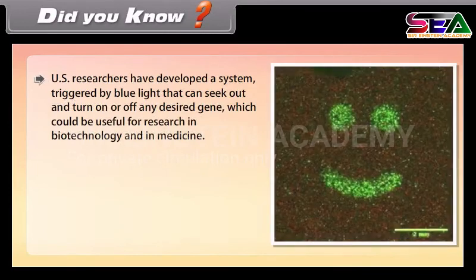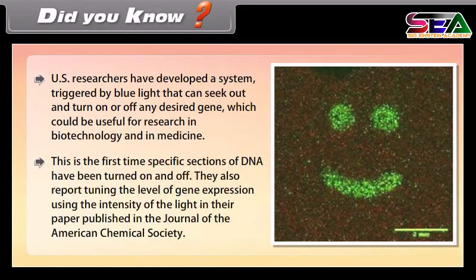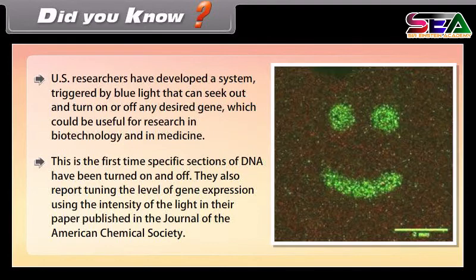Did you know? US researchers have developed a system triggered by blue light that can seek out and turn on or off any desired gene, which could be useful for research in biotechnology and medicine. This is the first time specific sections of DNA have been turned on and off. They also report tuning the level of gene expression using the intensity of the light, published in the Journal of the American Chemical Society.